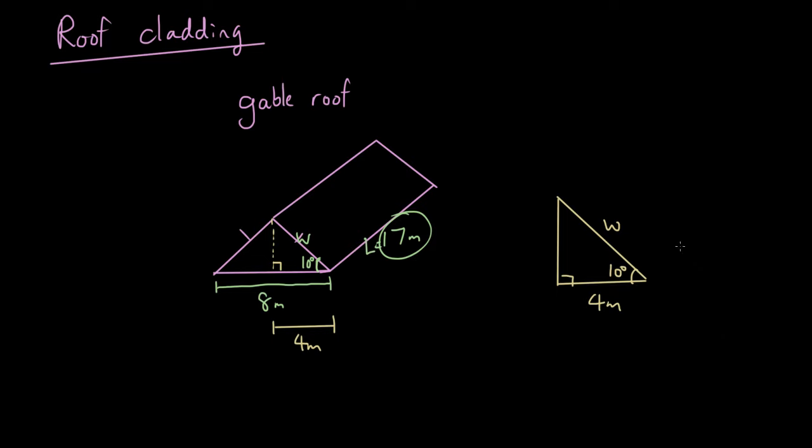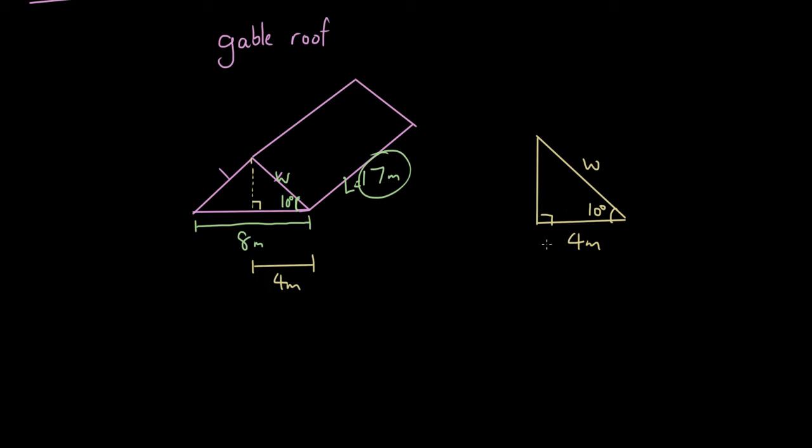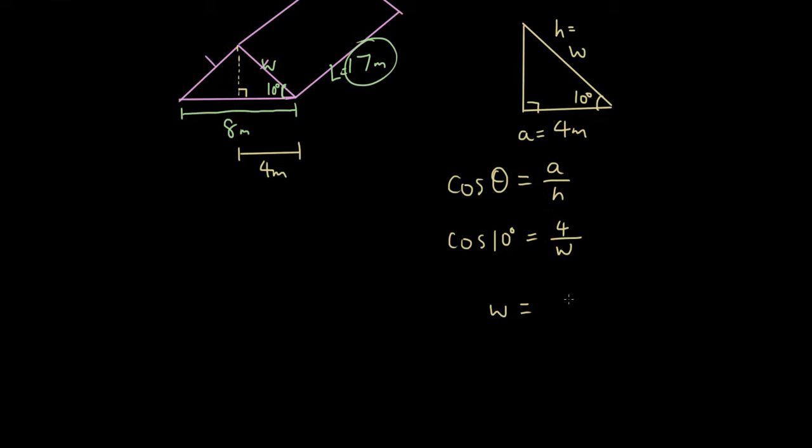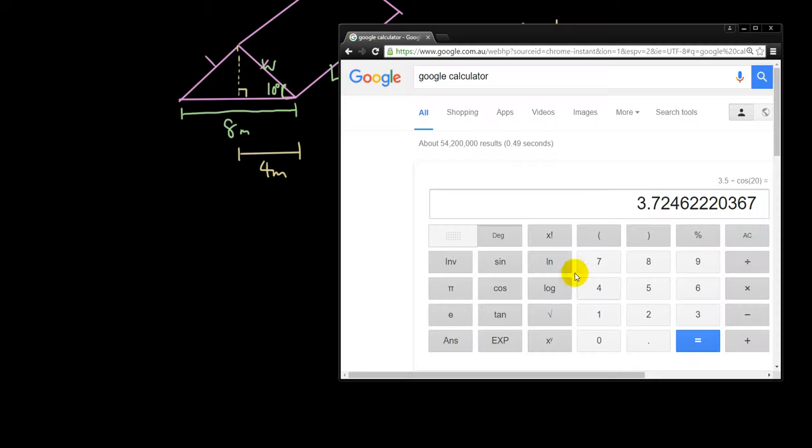To do that, I'm going to use the cosine ratio because this side is the hypotenuse and this side is the adjacent. So cosine θ equals adjacent over hypotenuse. Cosine 10 degrees equals 4 over w. Changing positions to make w the subject will be 4 divided by cosine 10.